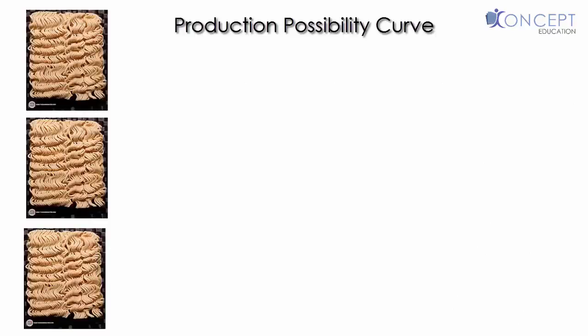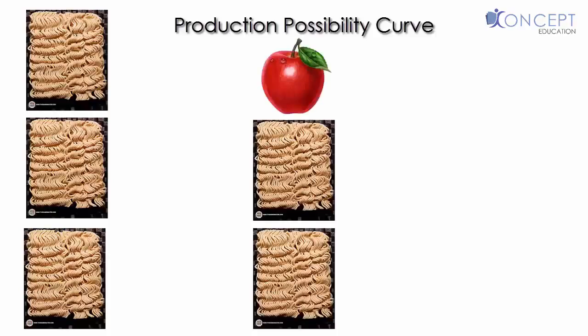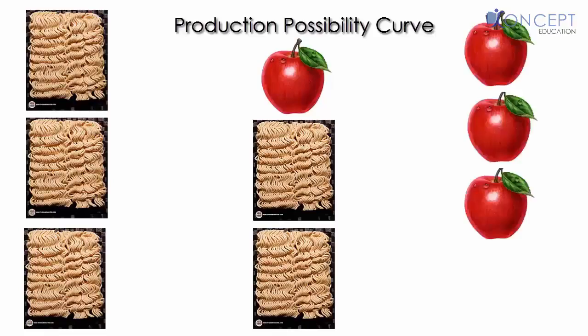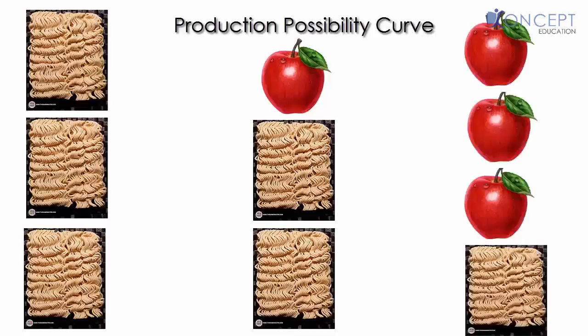Either you can have Maggie or you can have apple or actually a combination of both. Production Possibility Curve studies all possible combinations which can be made out of two options. So if you are really very hungry, either option number one could be eat three bricks of Maggie and zero apples. Or there can be another option that I can eat one apple and two bricks of Maggie. And then another third option, I can have three apples and one brick of Maggie. By all these options, I can satisfy my hunger.